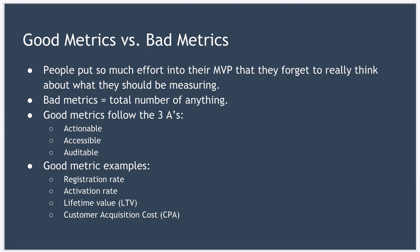Innovation accounting is about measuring progress. Many people put so much effort into the MVP that they forget to really think about what they should be measuring — they only measure vanity metrics or just plain bad metrics. A classic example of a lousy metric is measuring the total number of anything, such as total number of sales or total number of users. Useful metrics should always have three characteristics known as the three A's. They should be actionable — your metric should show clear cause and effect, so if you perform an experiment you understand how that experiment affected your metric. The metric should be accessible — make it as simple for everyone in the company to understand as possible. And finally, it should be auditable — it should be possible to dig into the data and see how a particular metric is put together.